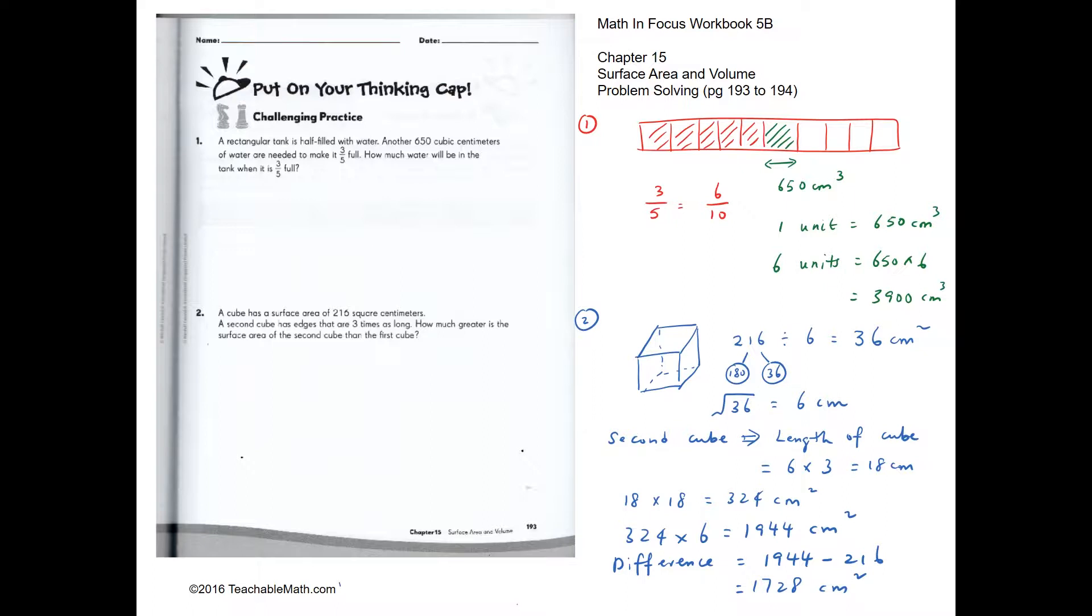We're converting three-fifths into six-tenths because it's easier to take half of ten than half of five. If we have ten units, half of ten units will be five units. So five units will be here and it is half full of water.